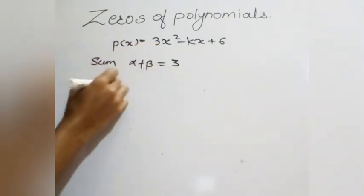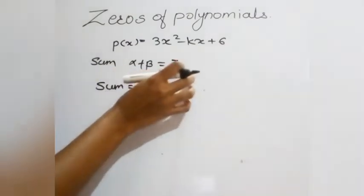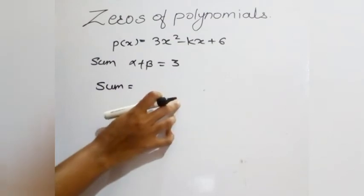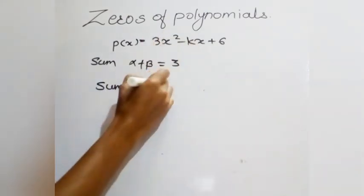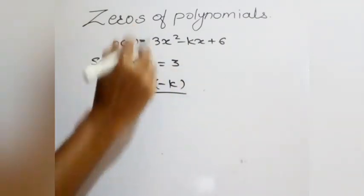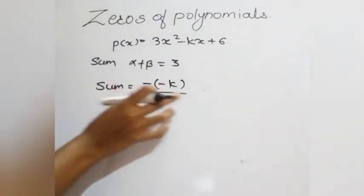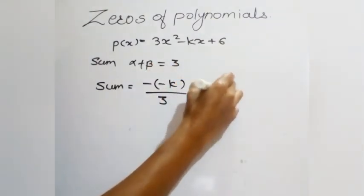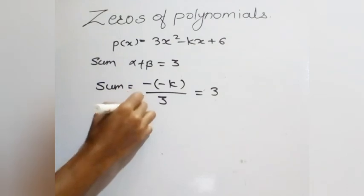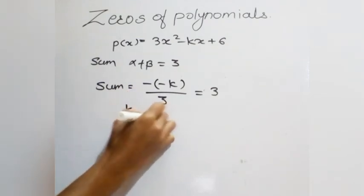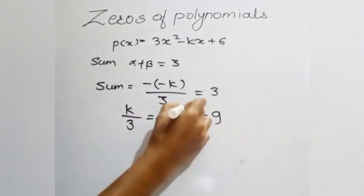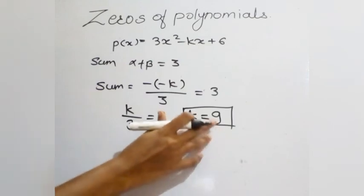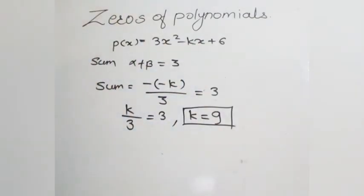We know the sum of zeros is minus of coefficient of x upon coefficient of x², which equals minus of minus k upon 3, which simplifies to k upon 3. This is equal to 3, so k equals 9. If we put k equal to 9 in the equation, we get the complete value of p(x).